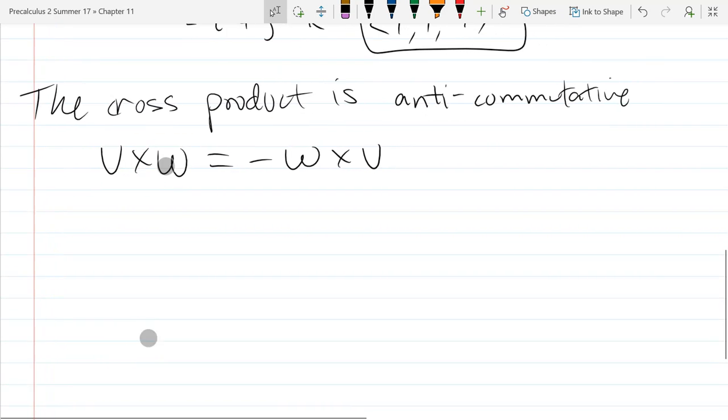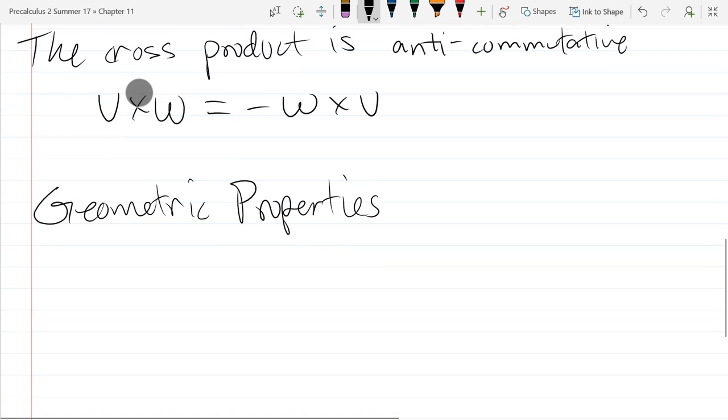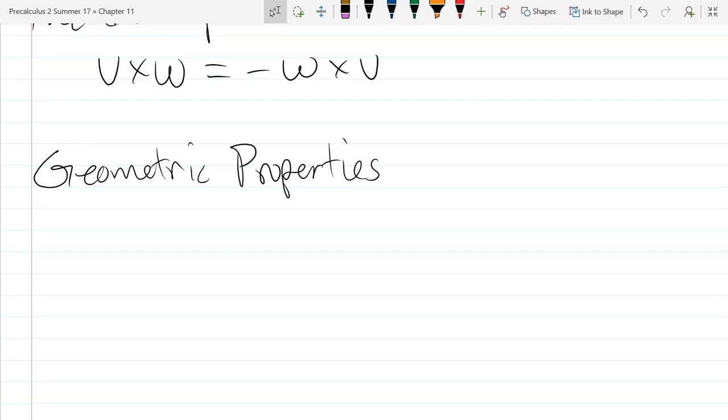So which geometric properties does a cross product have? Probably the most important one to understand is what's called the right-hand rule.